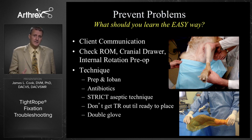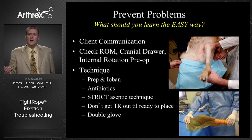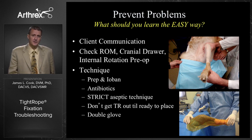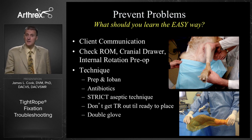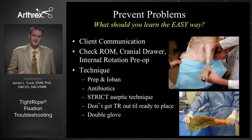Preoperatively, we want to assess the current instability status: check anterior cranial drawer, check internal rotation as shown in the video, and check range of motion — because we want to know, is the technique doing its job and is it causing problems? We won't know that unless we know where we started. We really want a good feel for where all of those parameters are before we do the procedure. Technique-wise, preparation is critical: antibiotic prophylaxis, strict aseptic technique, and everything we can do to minimize even the chance of infection so we don't have to troubleshoot it later.